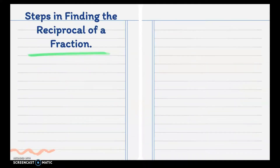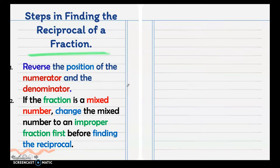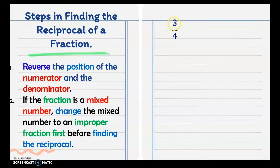Here are the steps in finding the reciprocal of a fraction. First, reverse the position of the numerator and the denominator. If the fraction is a mixed number, change the mixed number to an improper fraction first before finding the reciprocal. For example, the reciprocal of 3 fourths is 4 over 3 — we just reverse the numerator and denominator.